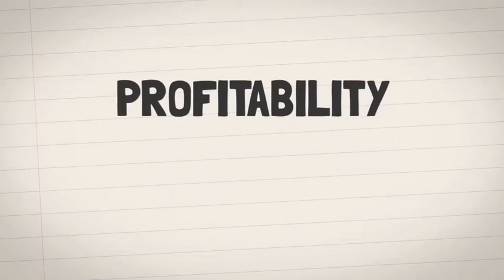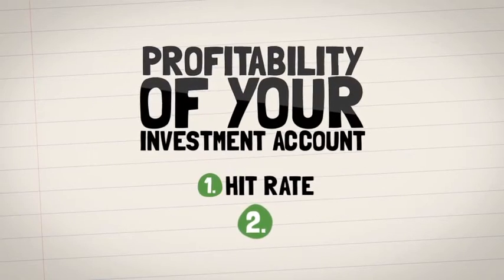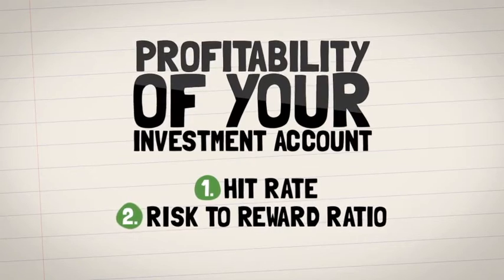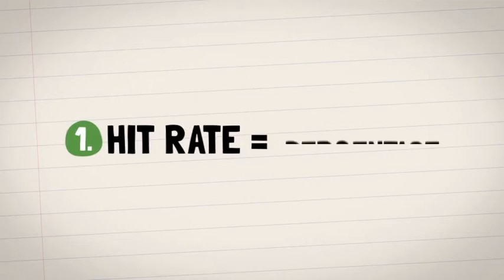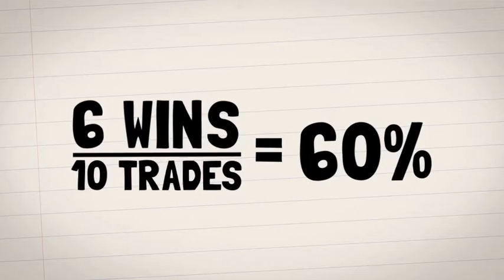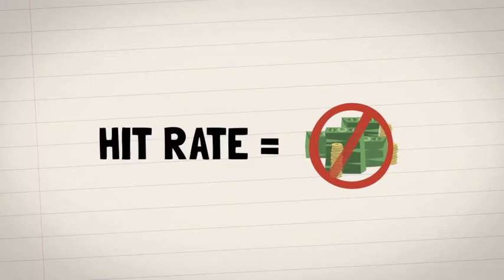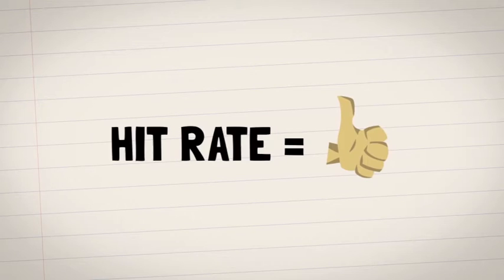In general, the profitability of your investment account depends on two factors: your hit rate and the risk-to-reward ratio of each trade. Your hit rate is the percentage of winning trades you make, so if you make 10 trades and win 6, your hit rate is 60%. Now, your hit rate doesn't factor in how much money you made or lost in those trades, just whether or not you won.